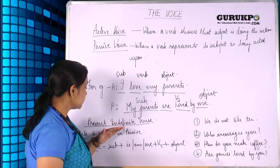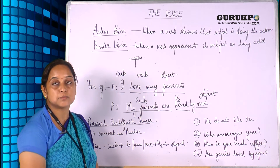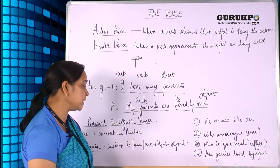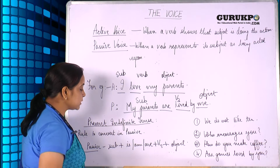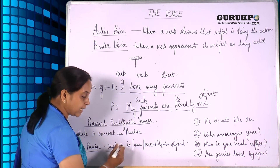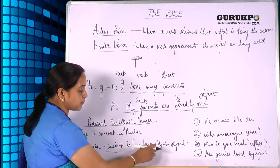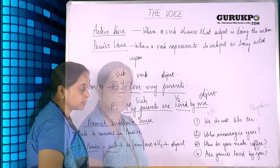We can start from the very first tense, which is the present indefinite tense. The rule to convert into passive voice is: first we take the subject, then 'is/am/are,' then the third form of the verb, and then the object.